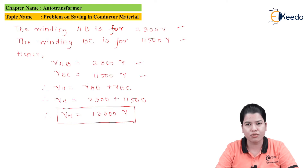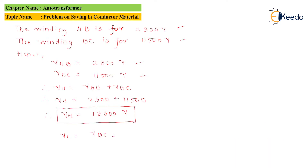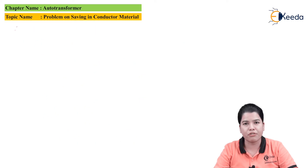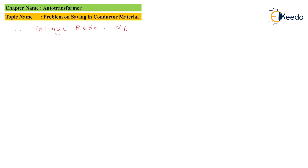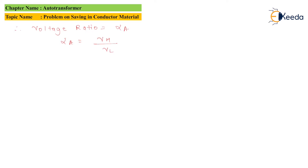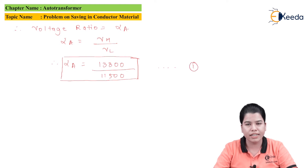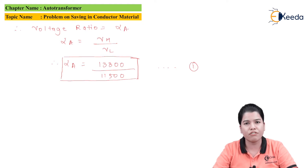VL is nothing but VBC, hence VL is equal to 11,500 volts. The voltage ratio is denoted by alpha A, and the formula is alpha A equal to VH divided by VL. Substituting the values, alpha A is equal to 13,800 divided by 11,500. This is equation number one representing the voltage ratio.